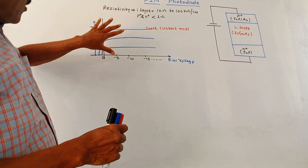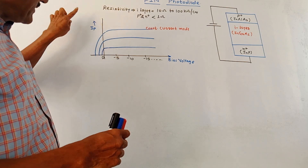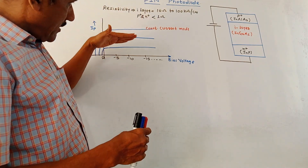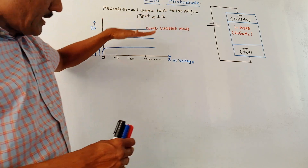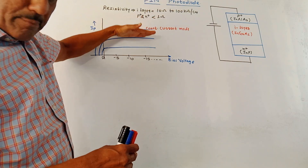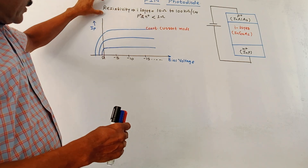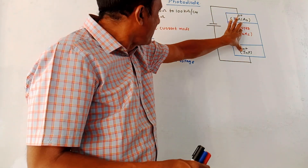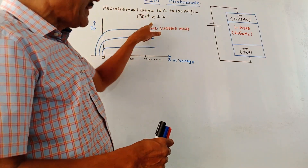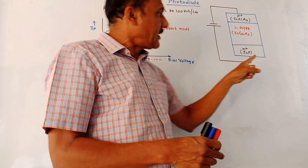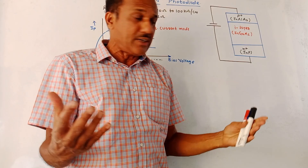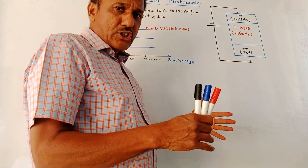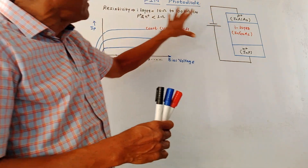This is the characteristic of the pin photodiode — a graph of bias voltage versus photocurrent, where IP stands for photocurrent. There is a region called the constant current mode. As far as resistivity is concerned, the resistivity of the I layer is between 10 ohm and 100 kilo-ohm, while the resistivity of the P+ and N+ regions is less than one ohm. Like the normal PN junction photodiode, this device must be operated in the reverse bias condition.